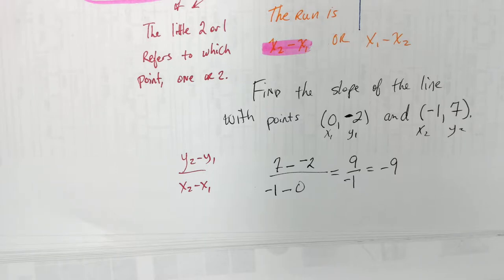So these two points have a slope of negative 9. It's going down — big time. Like you just got hit in the head with a cow going down.